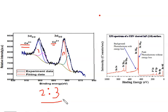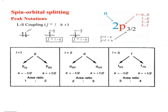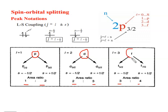This ratio helps us to identify which element is present in the material, or from which subshell the electron is being ejected. If the ratio of area is 1:2, that means the electron is coming from the P subshell — you will always find two split peaks. If the ratio of area is 2:3, that means it is the electron coming from the D subshell. If the ratio is 3:4, that means it is coming from the F subshell.